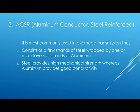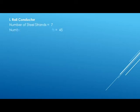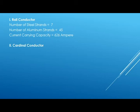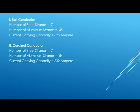Steel provides high mechanical strength, whereas aluminum provides good electrical conductivity. Examples of ACSR conductors are Rail, Cardinal, and Zebra. In the Rail conductor, the number of steel strands is 7 and aluminum strands is 45, with a current carrying capacity of 626 amperes. In the Cardinal conductor, the number of steel strands is 7 and aluminum strands is 54, with a current carrying capacity of 632 amperes.